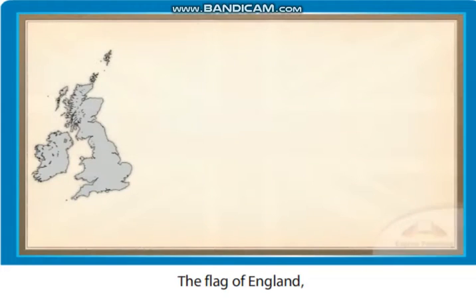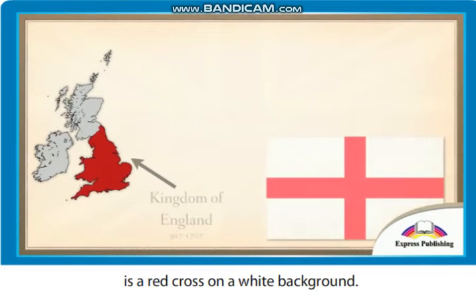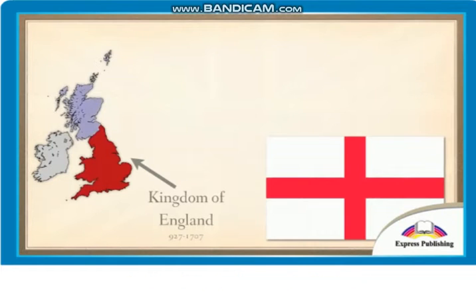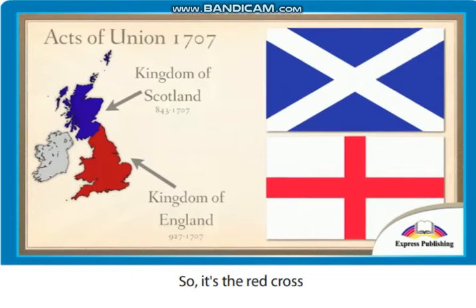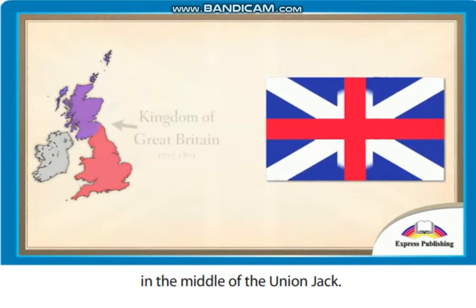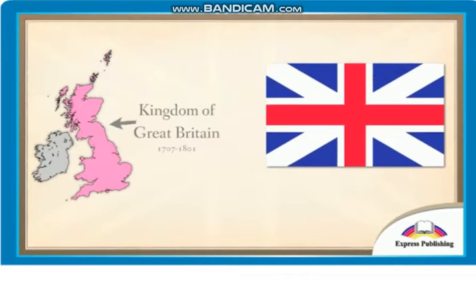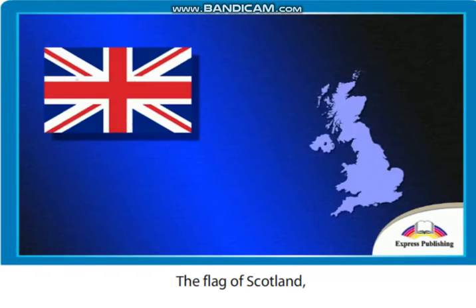The flag of England, or the St George's Cross, is a red cross on a white background. So it's the red cross in the middle of the Union Jack.